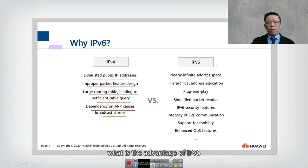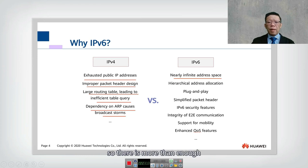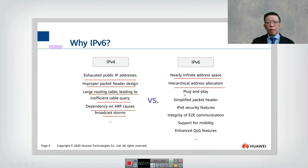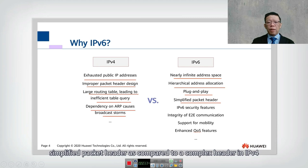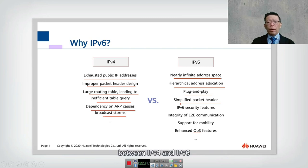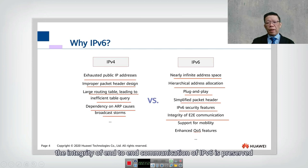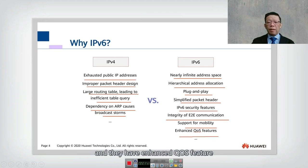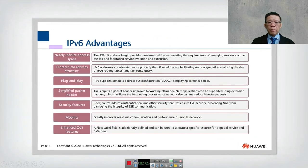IPv6's first advantage is that it is based on 128 bits, providing a nearly infinite address space — more than enough for every single IoT device and person in the world. IPv6 supports hierarchical address allocation, which is very efficient. It has a simplified packet header compared to the complex IPv4 header. IPv6 natively supports security features, preserving end-to-end communication integrity, supports mobility so roaming with an IP address is no longer an issue, and has enhanced QoS features.